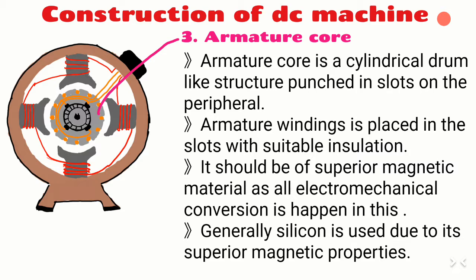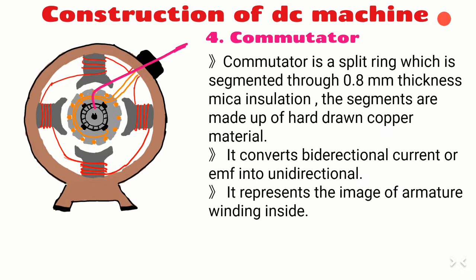The commutator is a split ring segmented with 0.8 mm thick mica insulation between segments. The segments are made of hard-drawn copper material. It converts the bidirectional current or EMF inside the coil into unidirectional output. It represents the image of the armature winding. The number of commutator segments is equal to the number of coils.